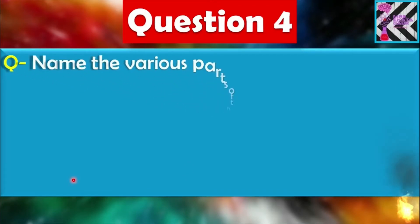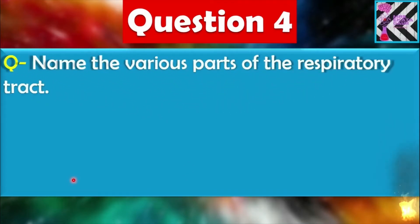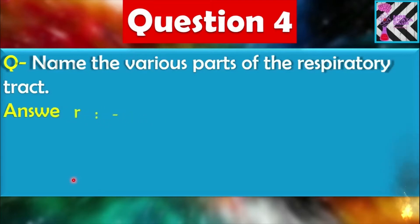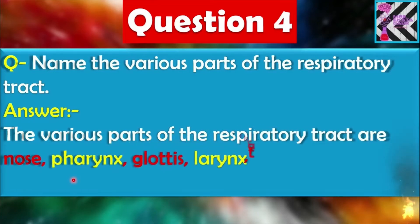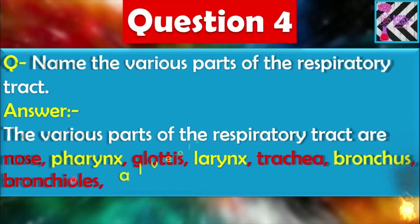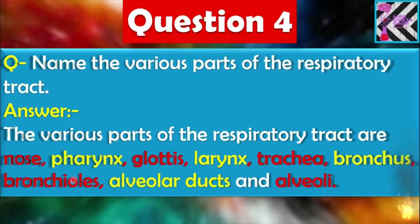Question number four: Name the various parts of the respiratory tract. The various parts of the respiratory tract are: nose, pharynx, glottis, larynx, trachea, bronchus, bronchioles, alveolar ducts, and alveoli.